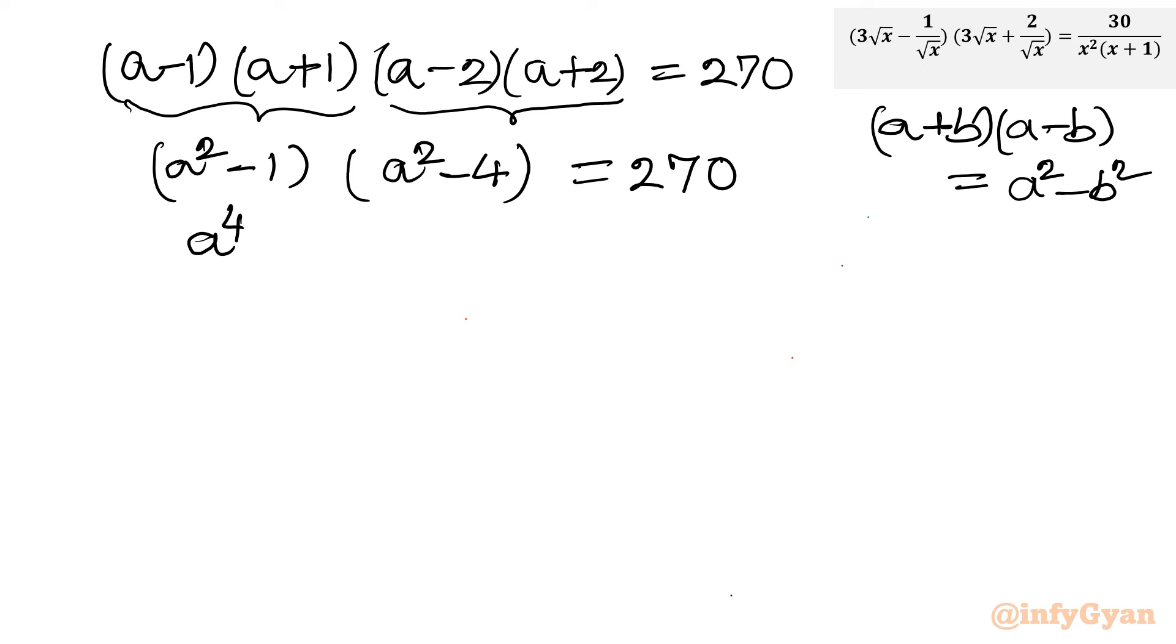Expand this. So a⁴ - 4a² - a², so -5a², -1 times -4 plus 4, equals 270. I can say this is a quadratic equation in a². So I will directly apply the Sridharacharya or quadratic formula by considering this is quadratic in a². Before we should write: a⁴ - 5a² - 266 = 0.